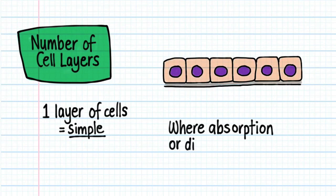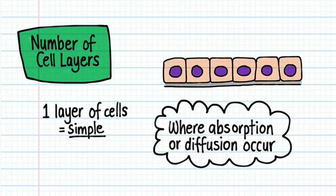Simple epithelium is found where rapid absorption or diffusion occurs, because material can pass really quickly through just one layer of cells.